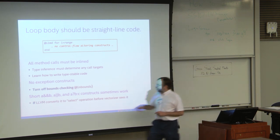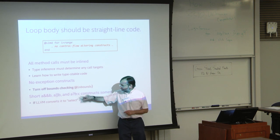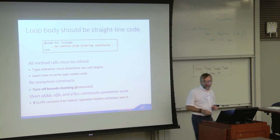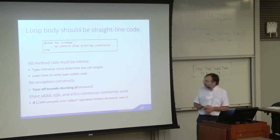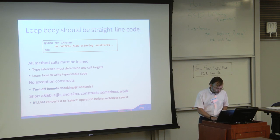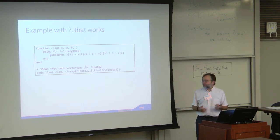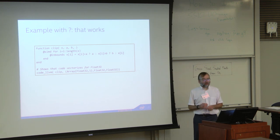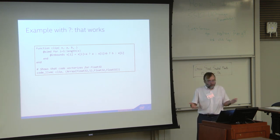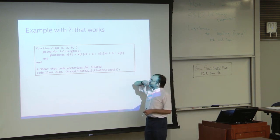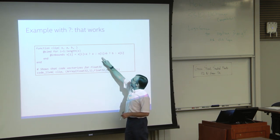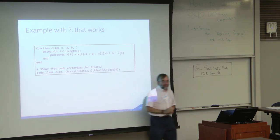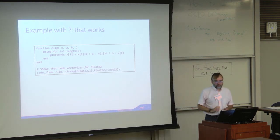With the ternary operator, the compiler has to prove that B and C are safe to evaluate before asking question A, in order to turn it into a form the vectorizer can deal with. Here's an example: both arms have x[i], so x[i] is going to be evaluated on either arm regardless, so it's safe to do it.